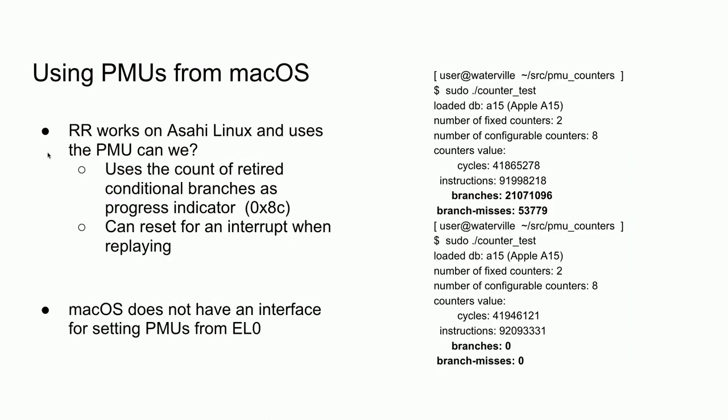How does RR handle this? They use the performance monitoring units — specifically the count of retired conditional branches as their progress indicator. We know this works on M1/M2 hardware because it works on Asahi Linux, which uses the same PMU. The idea is: check the branch count at the time a signal arrives, then for replay, preload the counter and say 'when you hit this many branches, fire an interrupt to me.' This is zero overhead — hardware handles it — and you get a precise point to stop.